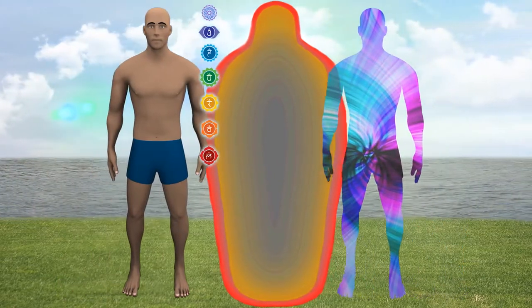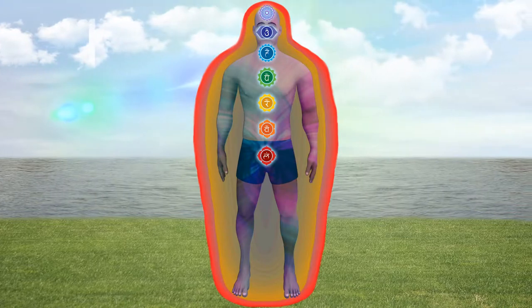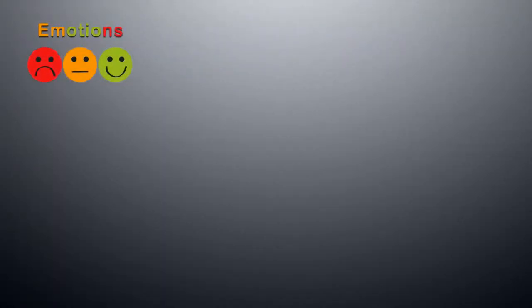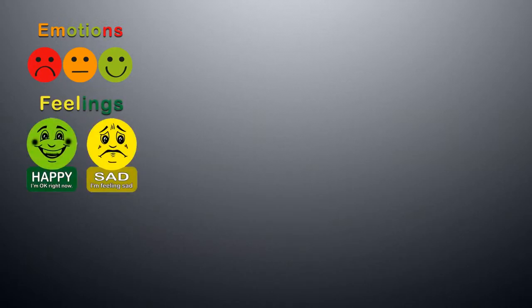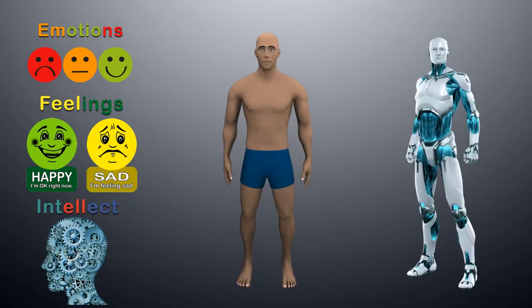The five pranas and the five organs of action together are called the Pranamaya kosh. Pranamaya kosh, but without emotions, feelings, and intellect, this body is just like an electric machine.